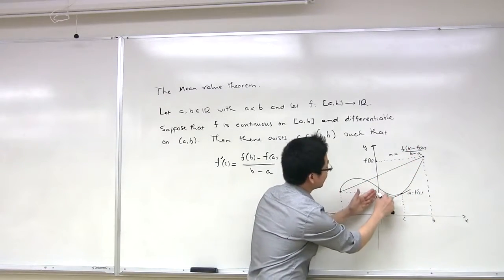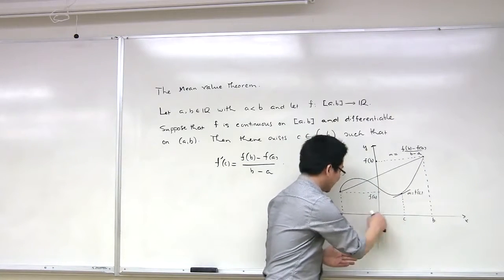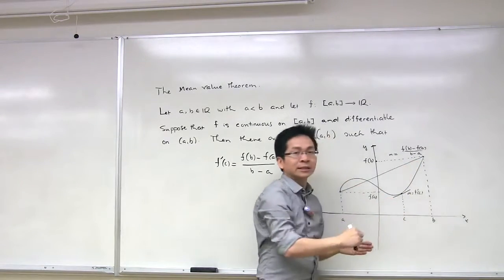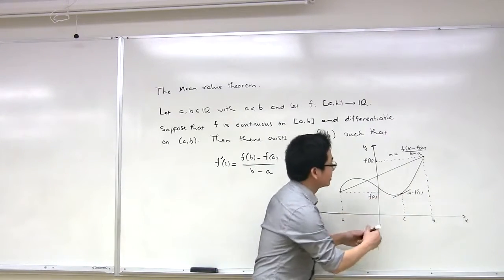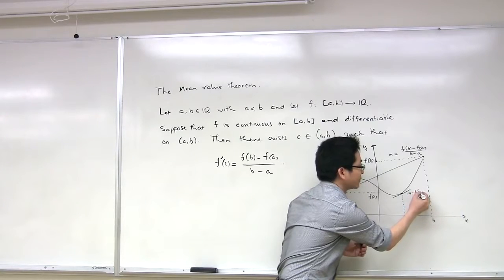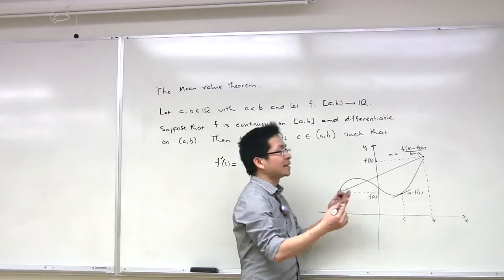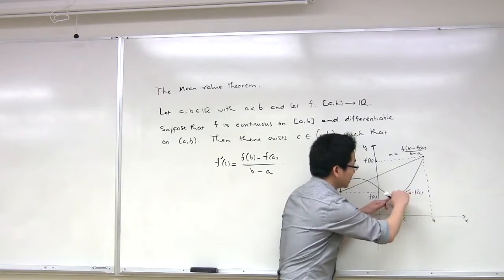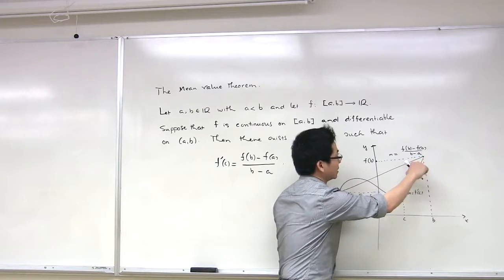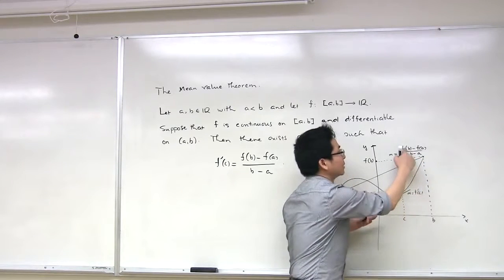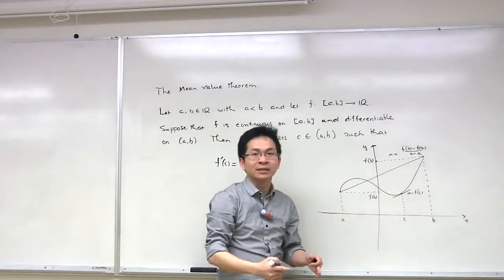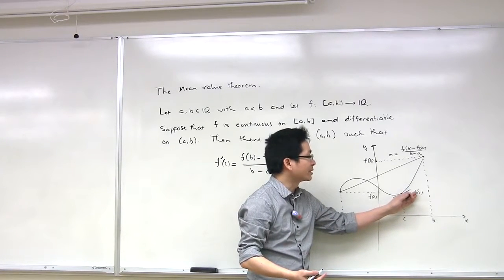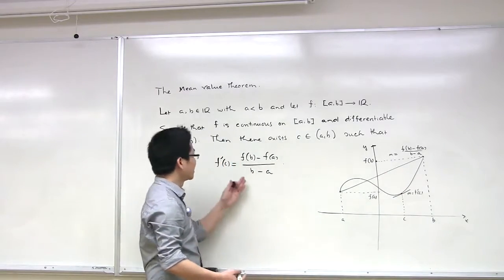Now if we look at the graph of the function y equals f(x), we will see that there exists some c in between a and b such that a tangent line at this point is parallel to this secant line. The slope of the tangent line is equal to the derivative of f at c. And since two lines are parallel if and only if they have the same slope, the derivative of f at c is equal to f(b) minus f(a) over b minus a.